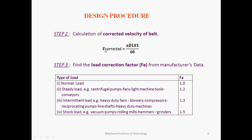After the diameters are known, we calculate the corrected belt velocity, because the standard selected d1 deviates from the initially calculated value, requiring a correction to the actual operating belt velocity. Then the load correction factor is obtained from the application's service conditions — for normal load, steady load, etc. — and used to increase the power transmission capacity by a certain factor. For example, for a compressor application, the correction factor is 1.3.